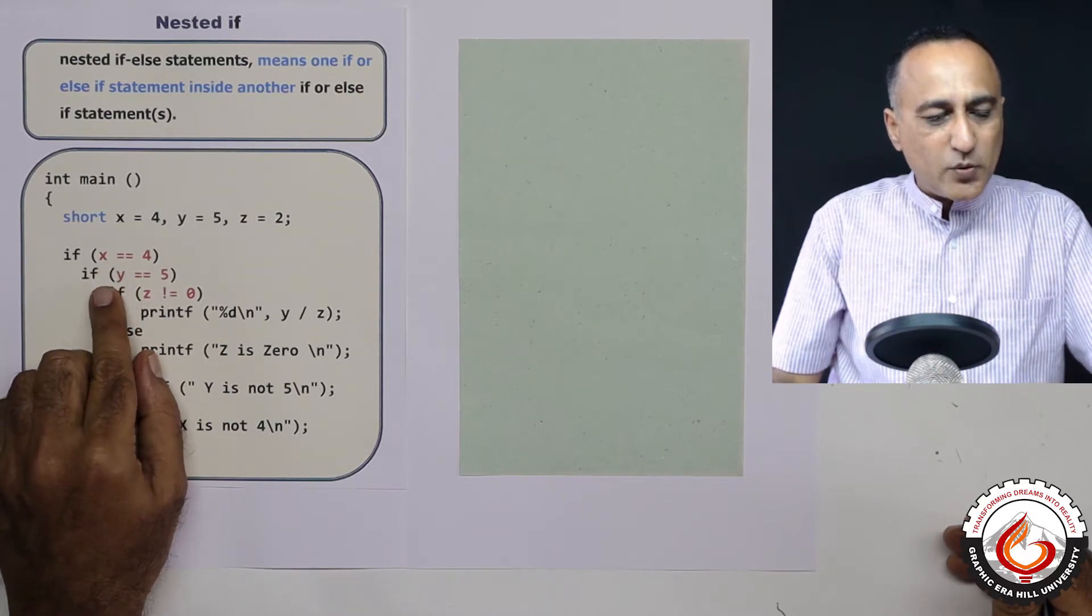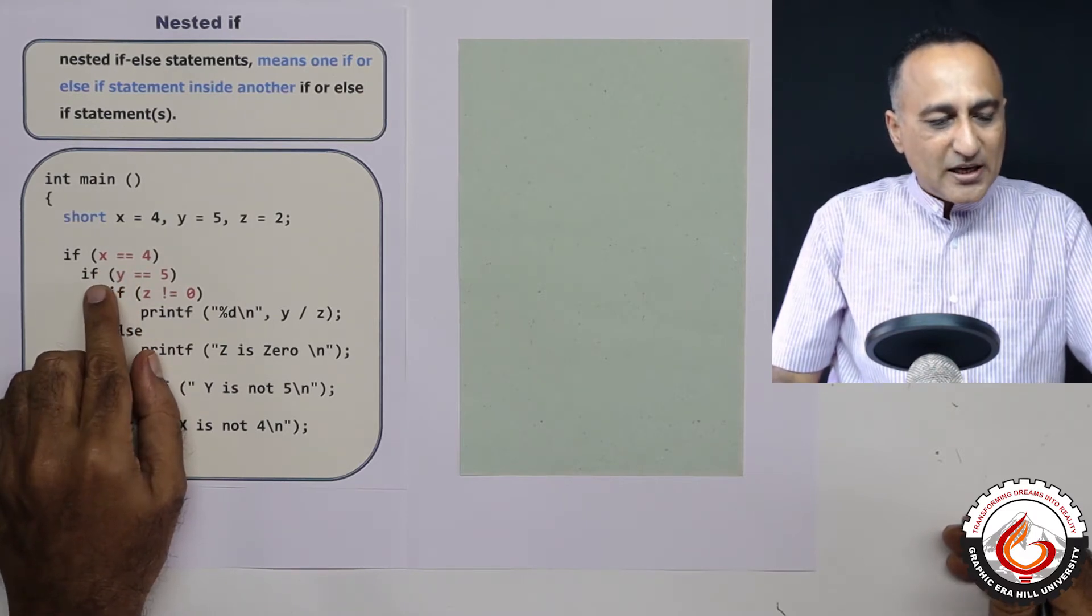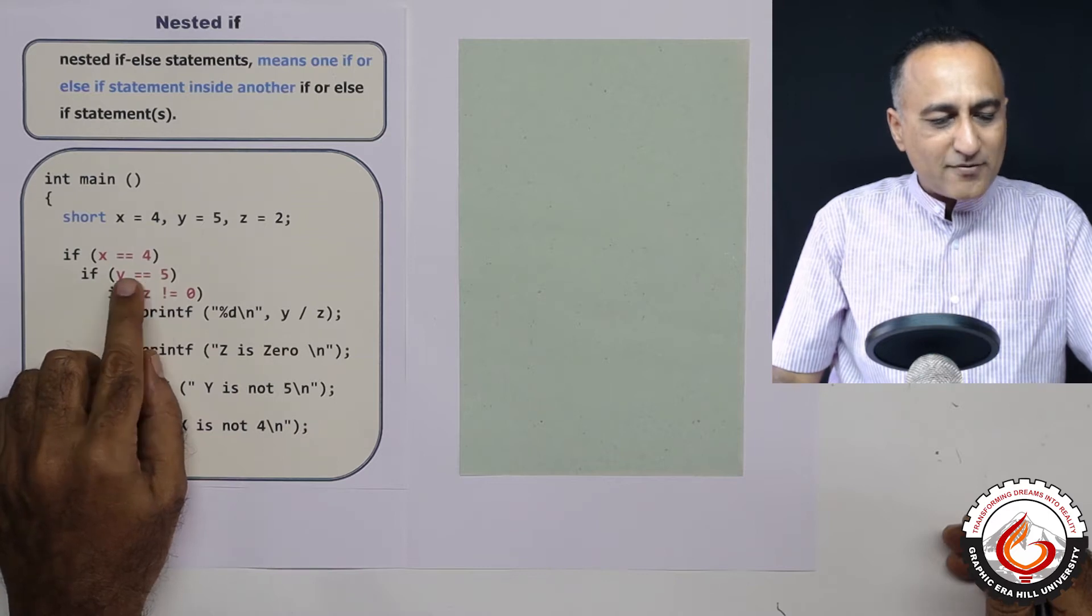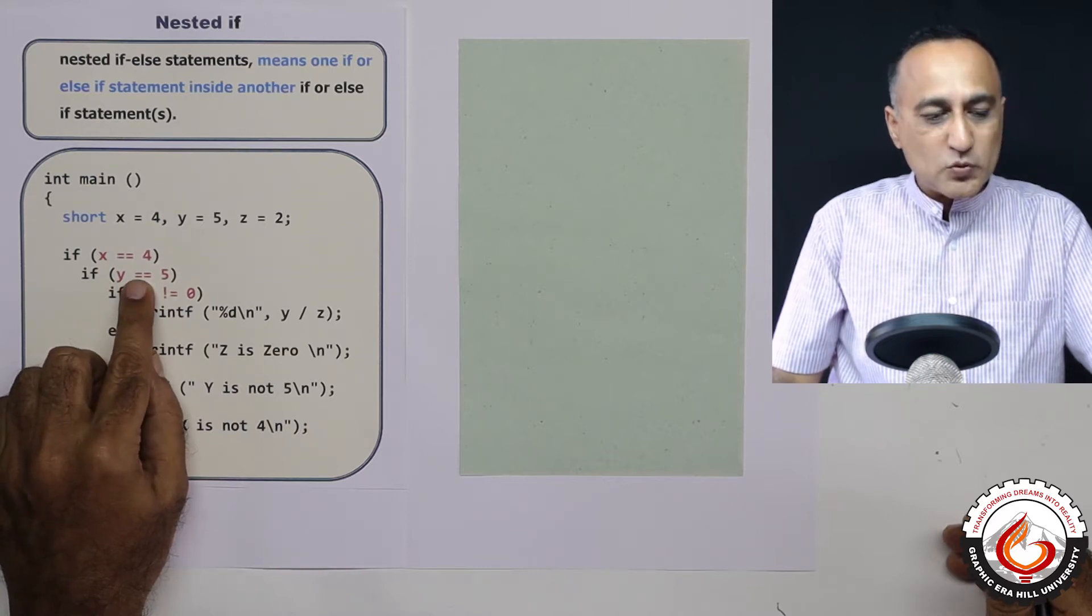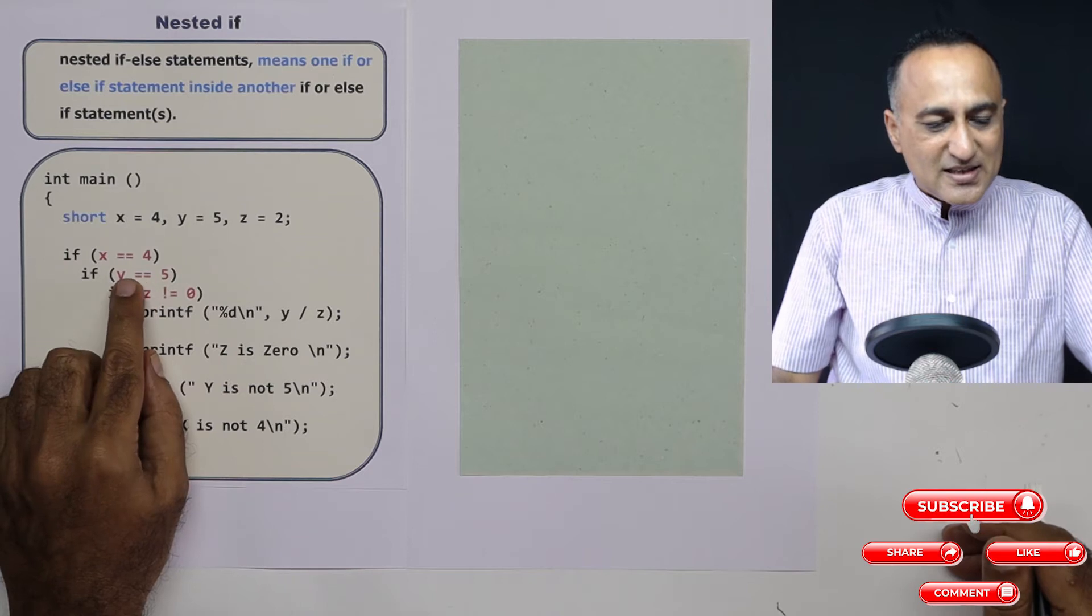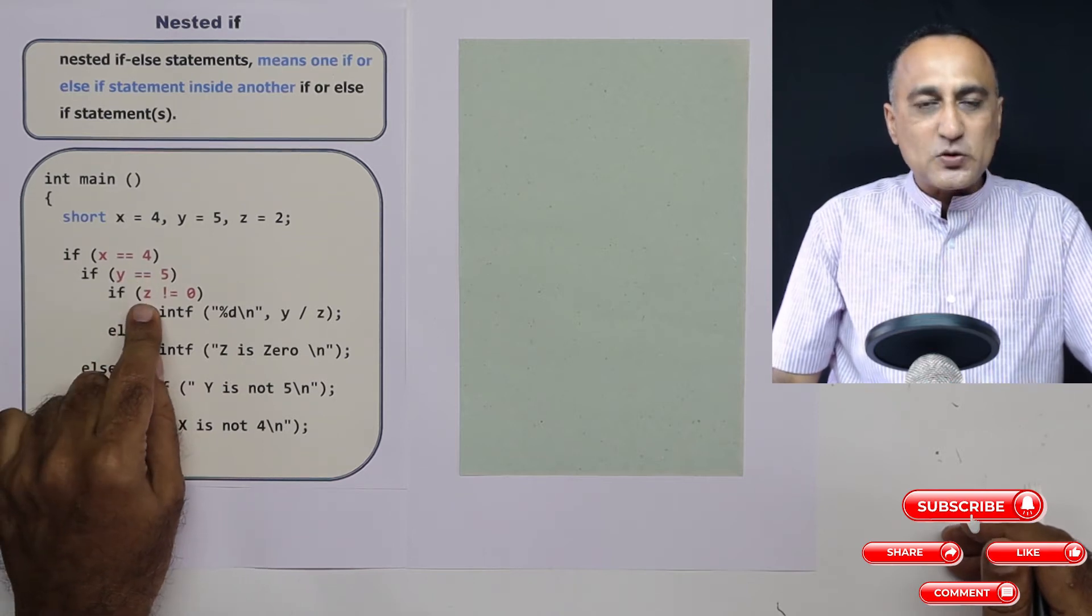Then because this is true it will go to the next if. If y is equal to 5, which is also true because y is 5.